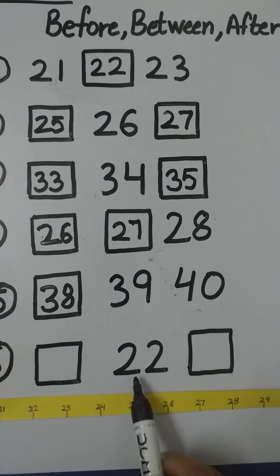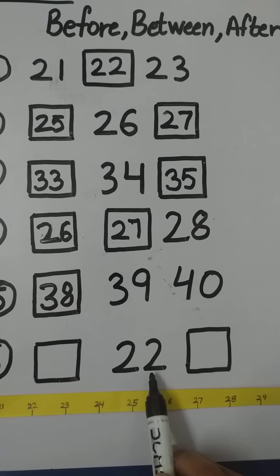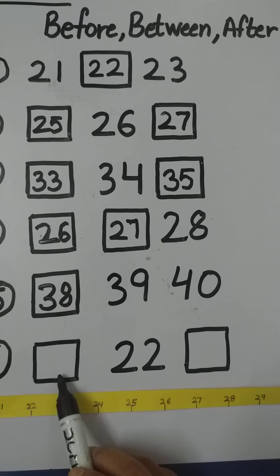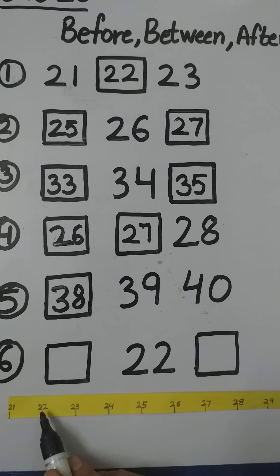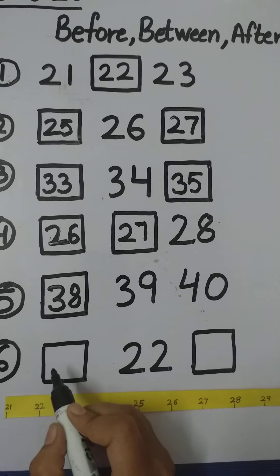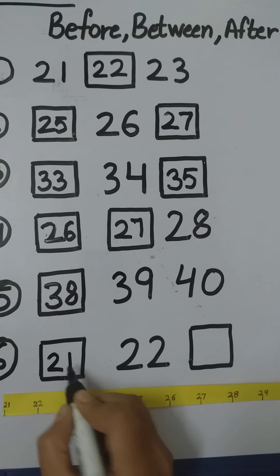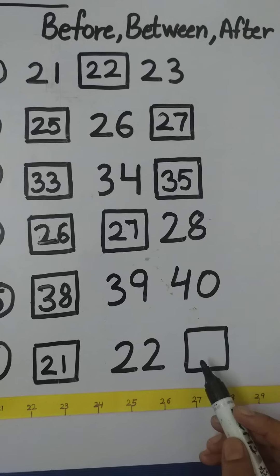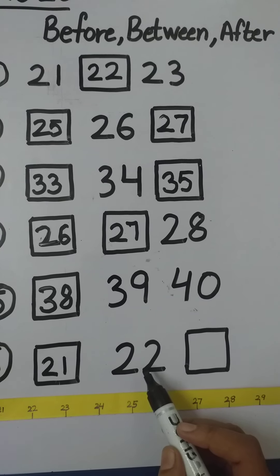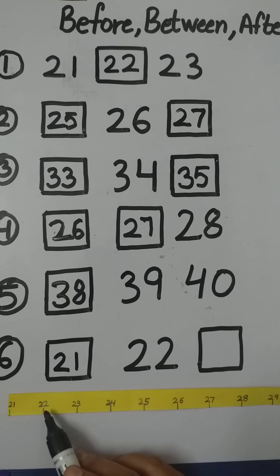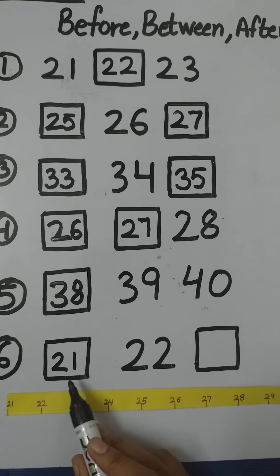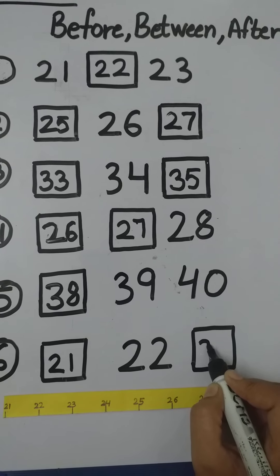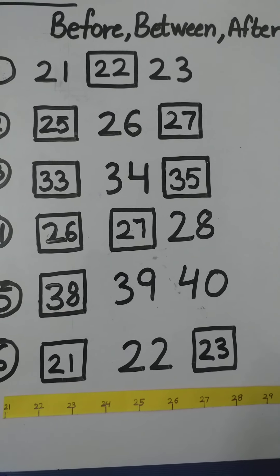Now the next number is 22. So tell me what comes before 22? Number 21. So we have to write here number 21. Now tell me what comes after number 22? Let's find out 22 and we have to move towards the right hand side. So number 23. So we have to write here 23.